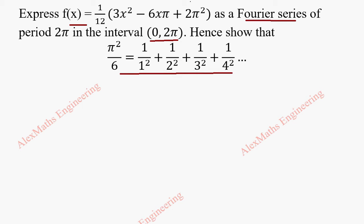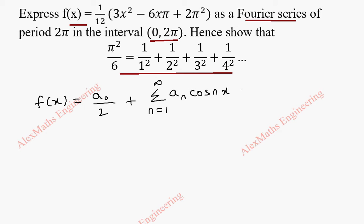So first we are going to write the formula: f of x equals a0 by 2 plus sigma n equal to 1 to infinity of an cos nx, plus sigma n equal to 1 to infinity of bn sin nx.